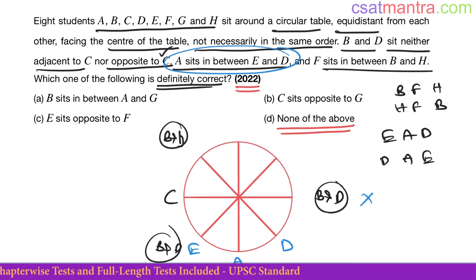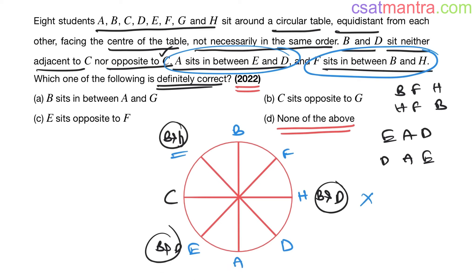F sits between B and H. H I am having here, F, B. See, our condition satisfied - B and D are not adjacent to C, not opposite. B is here, D is here, not adjacent, not opposite. Now who is left? G is left. G I am placing here.